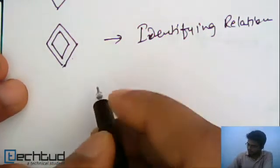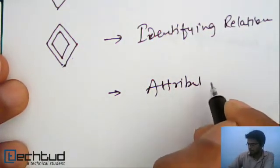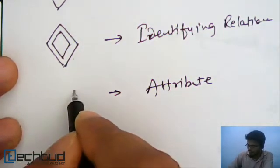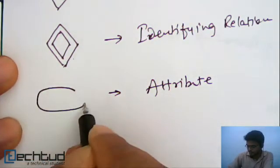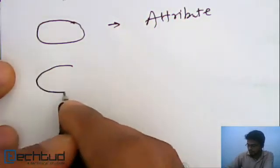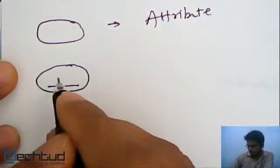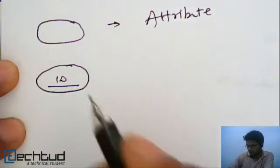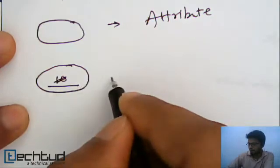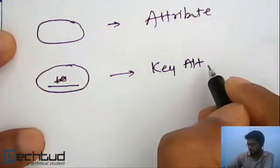Well, another one we have studied is attribute. Attribute. So, how do we represent attribute? We represent attribute with an ellipse. Okay. Sometimes you will see the ellipse having some attribute which is underlined. Okay. For example, id. Something like this. The attribute will be underlined. So, it means this is a key attribute.